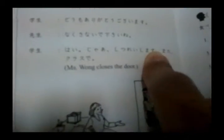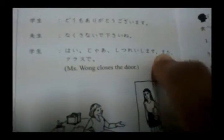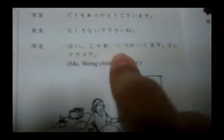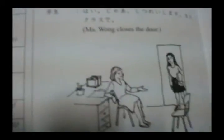The teacher adds 'Nakusanai de kudasai ne?' — I'm not sure what that means, I'll have to review. Emily says 'Hai, jia, shitsure shimasu' — yes, I'll be leaving now. The teacher replies 'Mata ikurasude' — see you later at class.